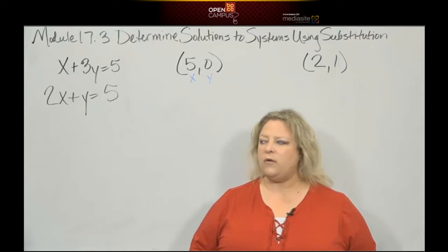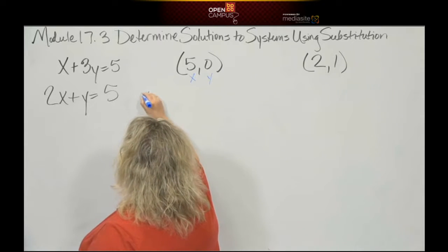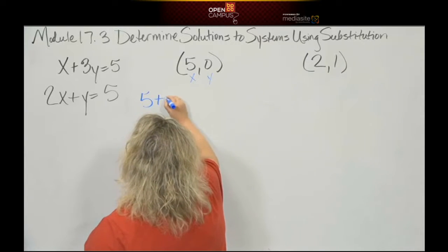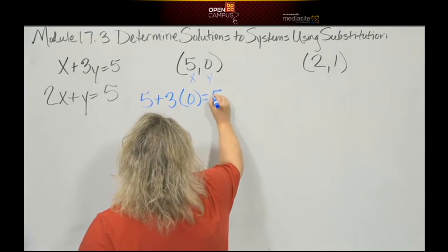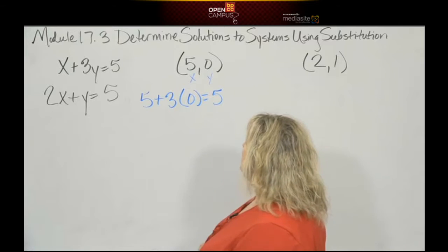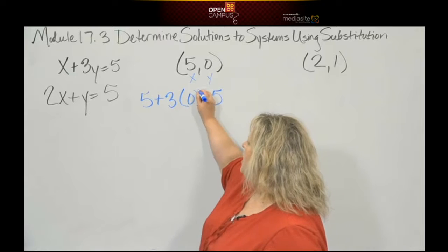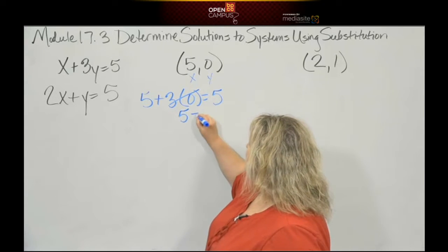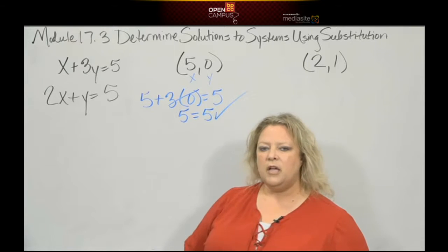Let's plug them in. We have 5 plus 3 times y—y is 0—equals 5. Let's work that out: 3 times 0 is 0, so I have 5 plus 0. Five equals five—is that true? Yep, it is. So this ordered pair is a solution for that equation.